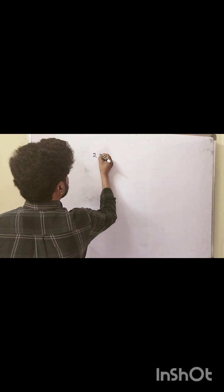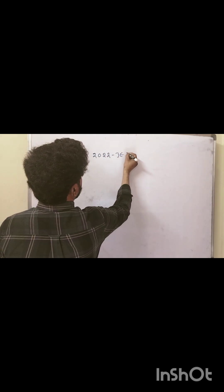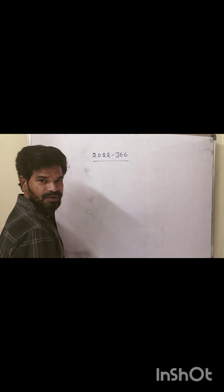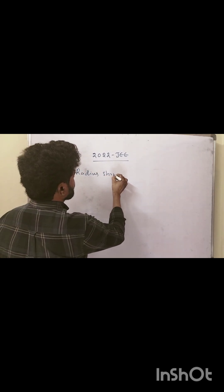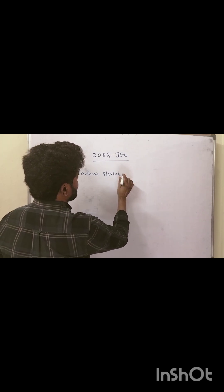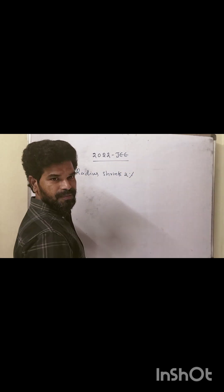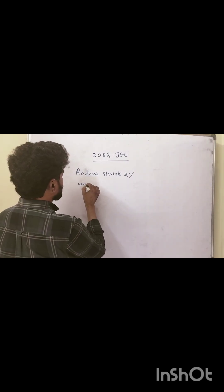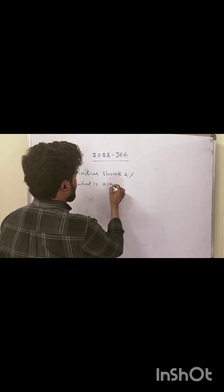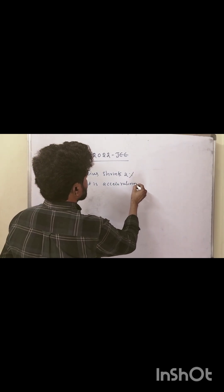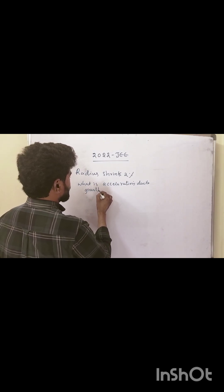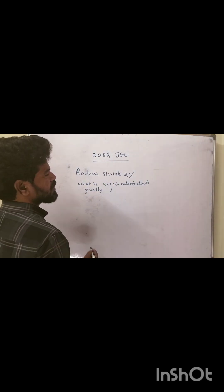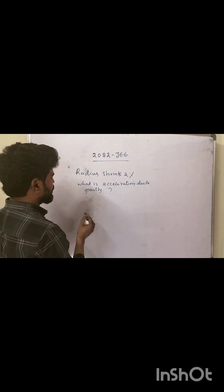This is a 2022 exam question. The radius of the Earth shrinks by two percentage. The question asks: what is the acceleration due to gravity? Now the solution is as follows.